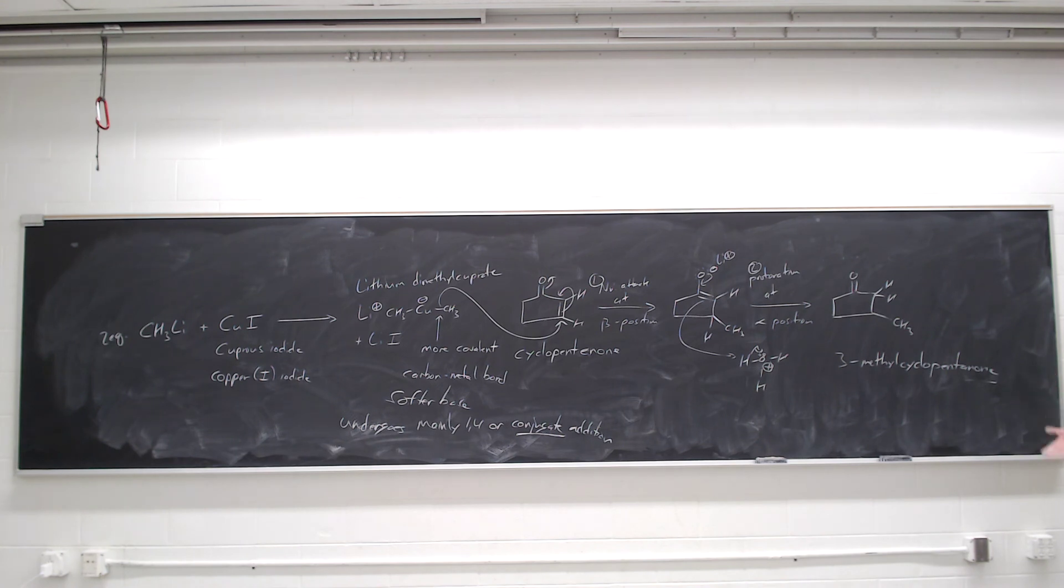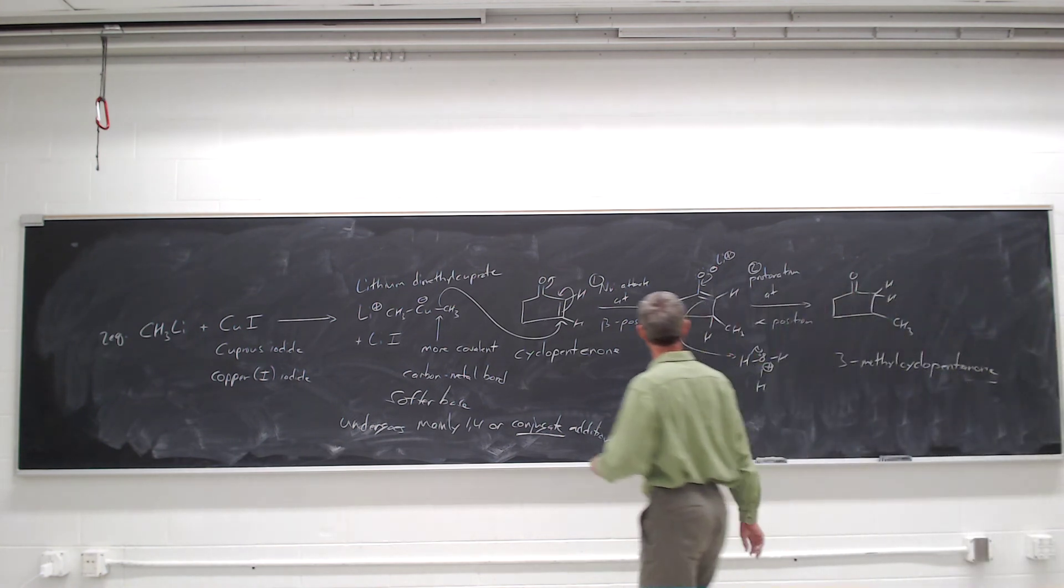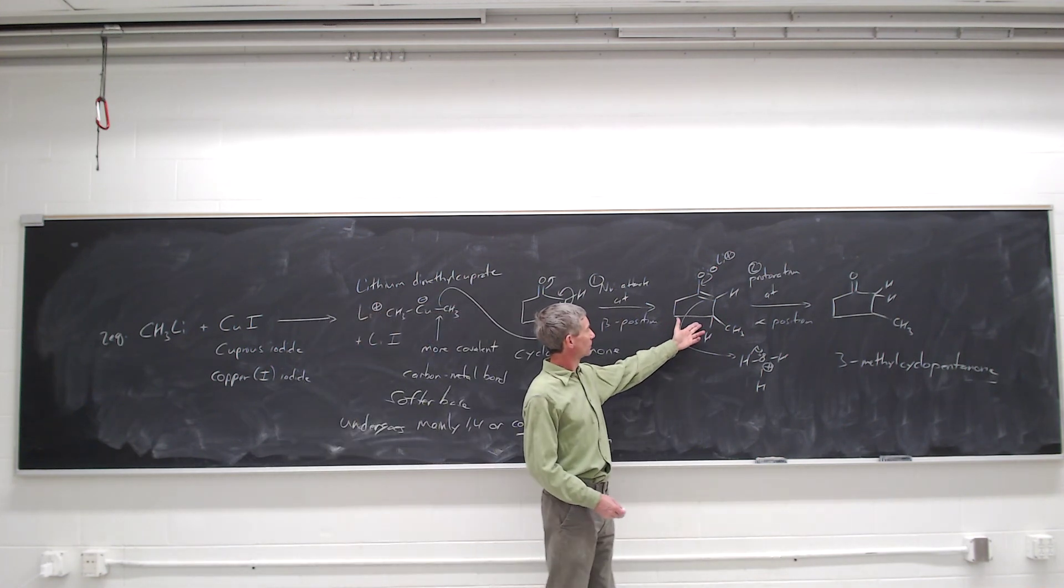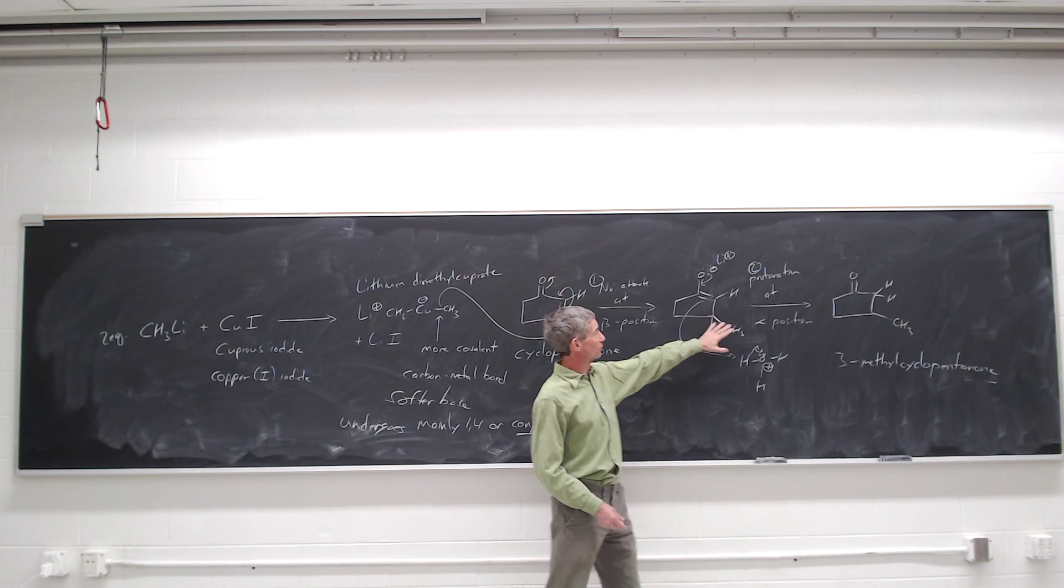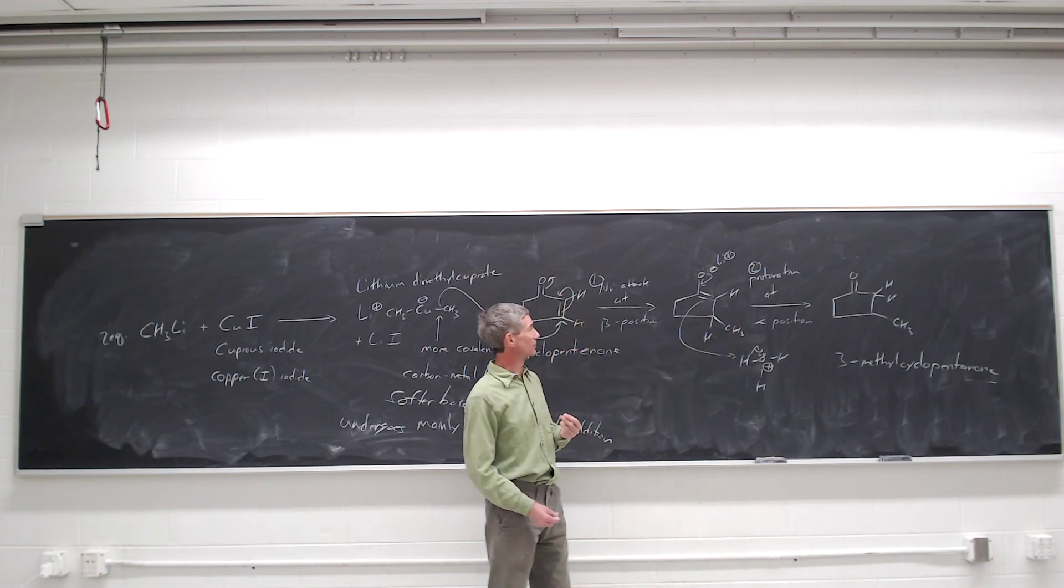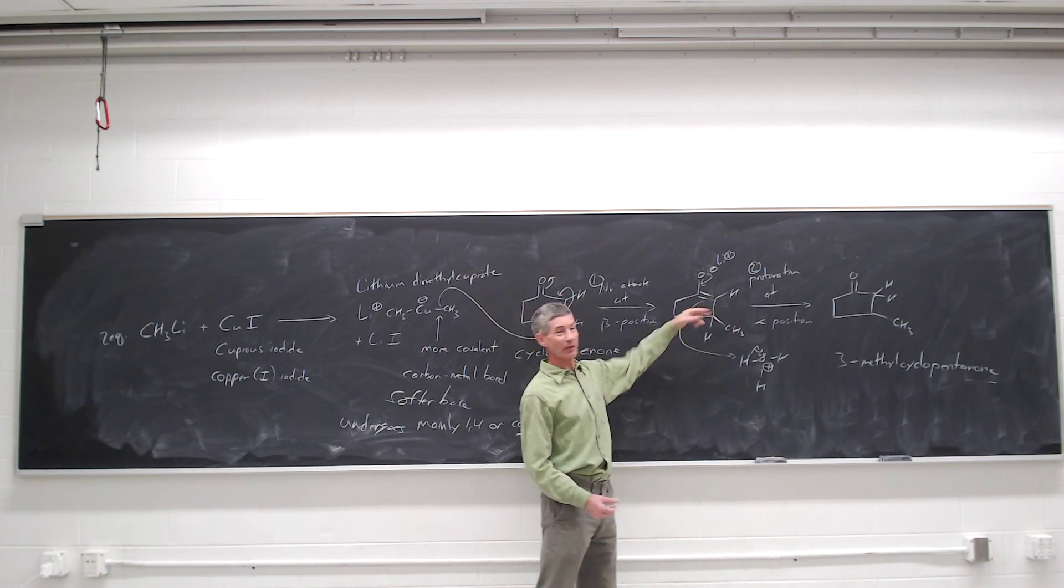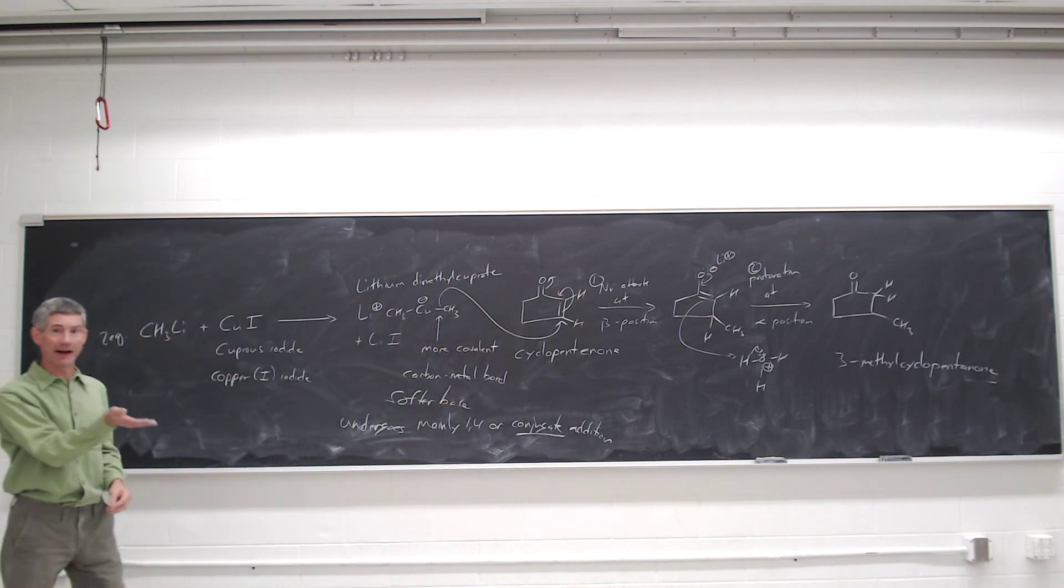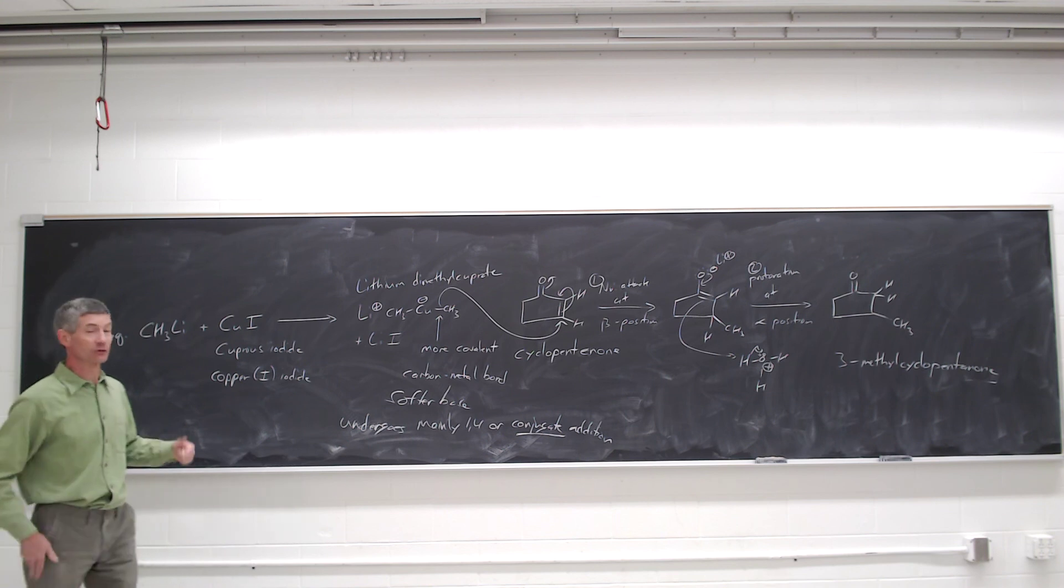What else can undergo conjugate addition? That's what we'll talk about in the next video. And you may have noticed that you have an enolate here. It's not necessary to just protonate the enolate from one-four addition. We can trap that enolate, which any other reagent is likely to react with an enolate and generate the corresponding addition product.